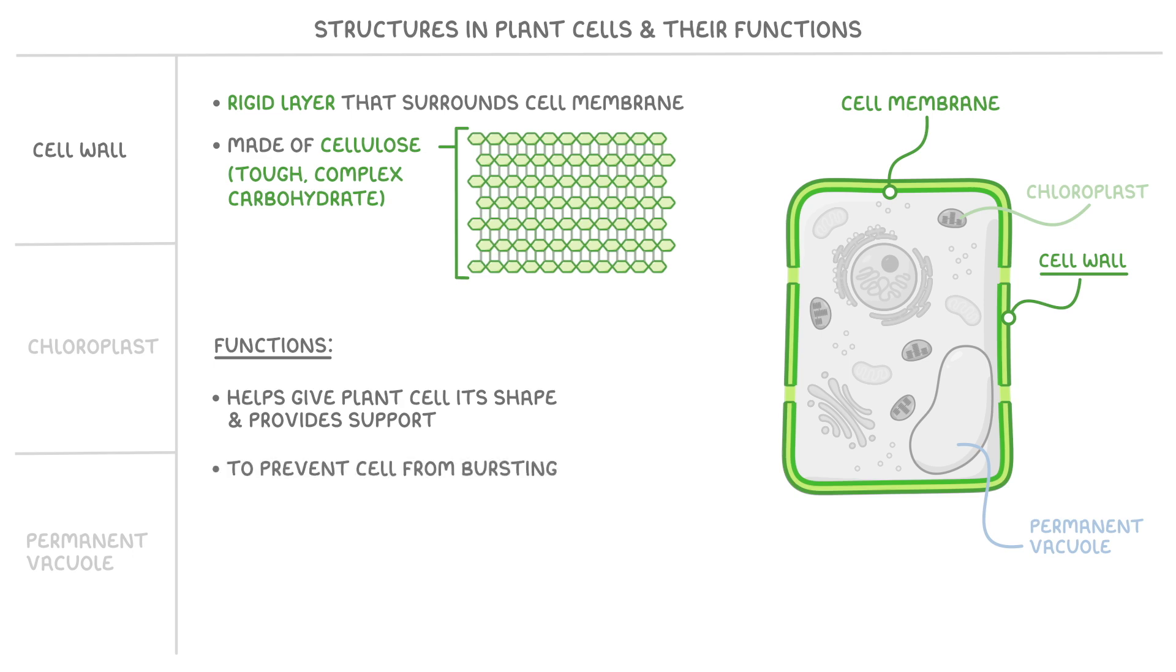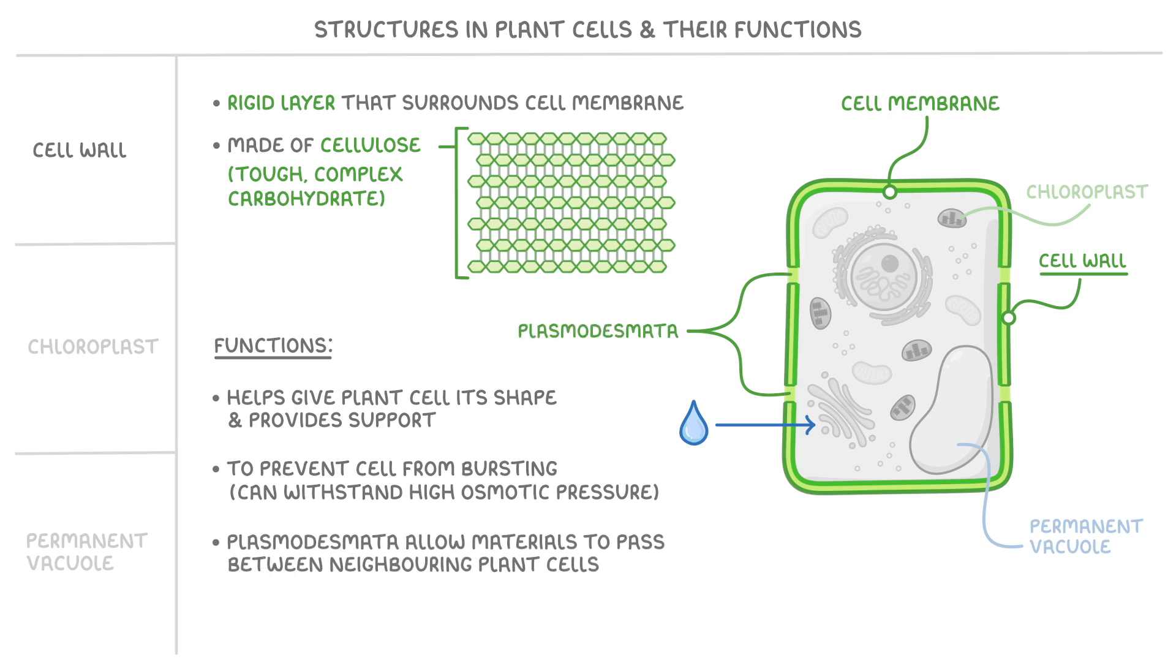Another key function is to prevent the cell from bursting when it takes in water, because the cell wall can withstand a high osmotic pressure, which basically just means a lot of water can be held within the cell without it bursting open like an animal cell would. The cell wall also contains tiny gaps or channels called plasmodesmata, which allow materials to pass between neighbouring plant cells so they can communicate and exchange nutrients.